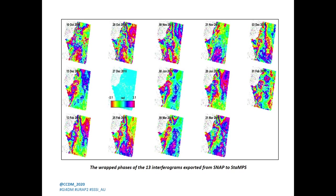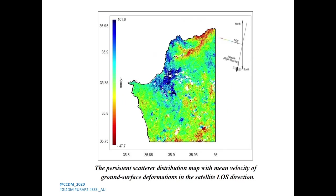These rings represent half the wavelength of Sentinel-1, so each ring represents 2.77 cm of displacement in the line-of-sight direction. After exporting the data from SNAP to STAMPS and completing all steps in MATLAB under Linux, a multi-point dataset of 23,500 persistent scatterers was generated. The mean velocity ranged from minus 47 to 101 mm, confirming the presence of ground surface deformation and landslides in the study area during the study period.